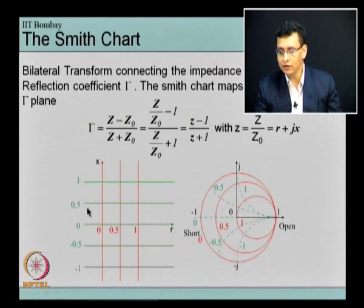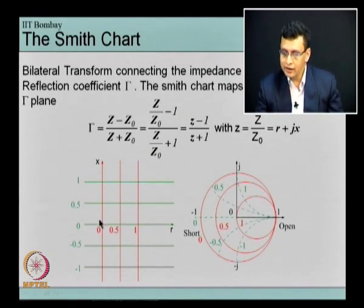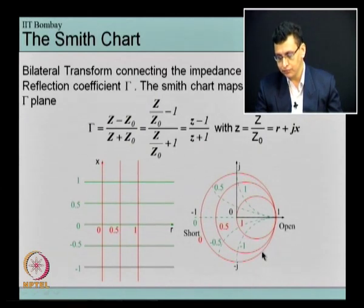It is kind of like a conversion from straight lines to circles. But another advantage is that the entire right half of the z plane, that is those values of z for which small r is greater than 0, is now enclosed within this circle having a radius 1. In other words, all passive impedances are now concentrated within this circle and I can visualize all these impedances in a small space.